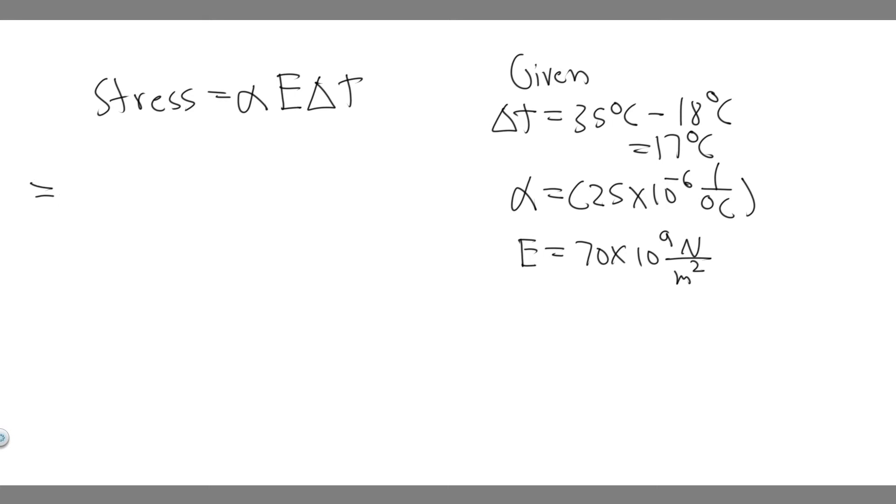So all we got to do is just plug these in to solve. So we have alpha, which is 25 times 10 to the minus 6. And then we've got E, Young's modulus, so 70 times 10 to the 9, and then times the change in temperature.